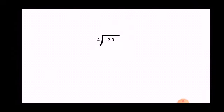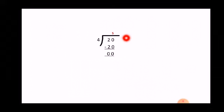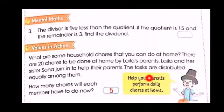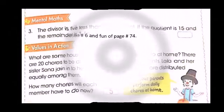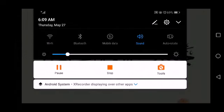So we divide 20 by 4. Write 20 inside the division sign and 4 outside. Recall the table of 4. 2 is smaller than 4, so take along 0 with it — making 20. 20 comes in the table of 4, 5 times. Write 5 at the top and minus 20 below. Subtract: 20 minus 20 equals 0. So the quotient is 5, and we write 5 in the given box. That means each member has to do 5 tasks.